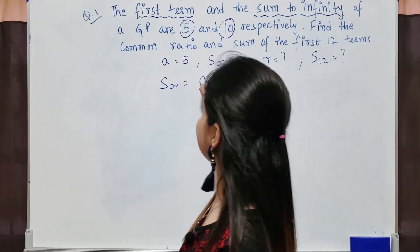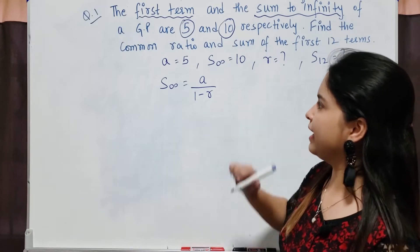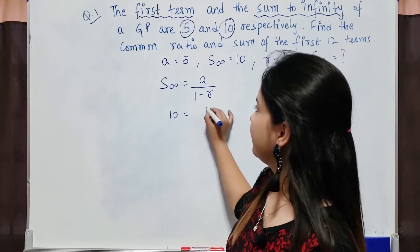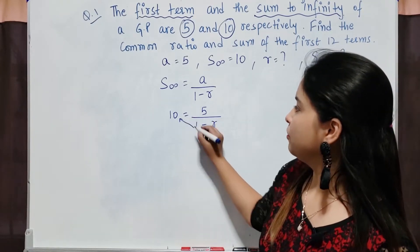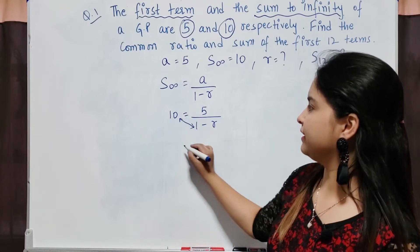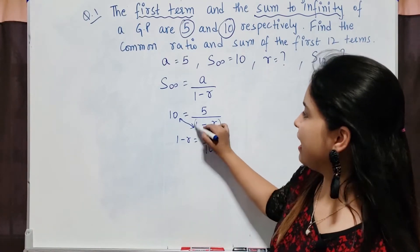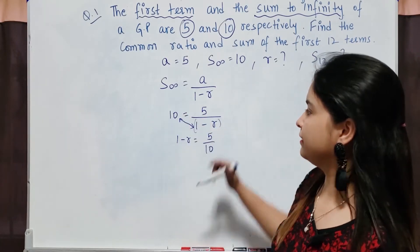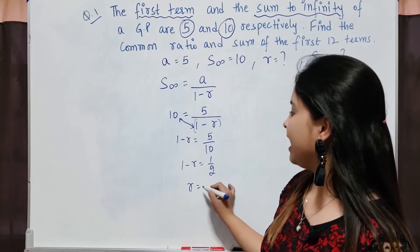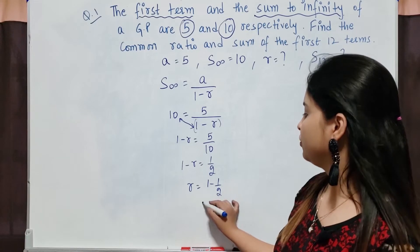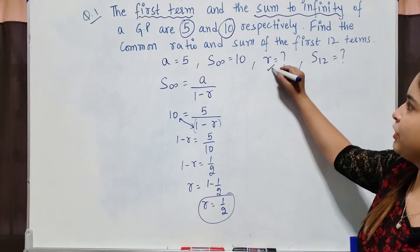First we will calculate the value of r. S∞ = 10, so 10 = a over (1 minus r), where a is 5. Move 1 minus r up and bring 10 down: 1 minus r = 5/10. This gives 1 minus r = 1/2, or r = 1 minus 1/2. Therefore r = 1/2.